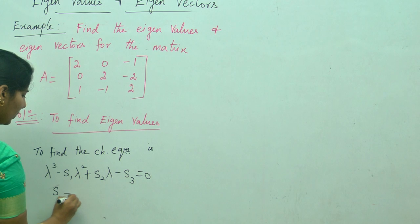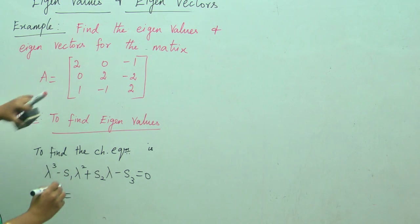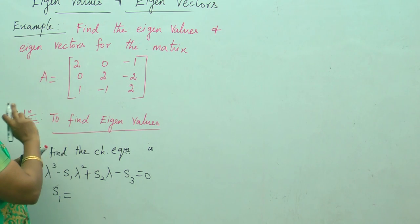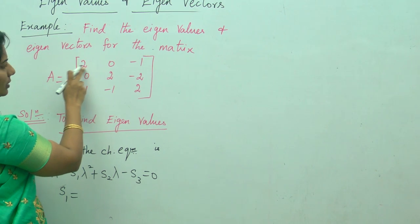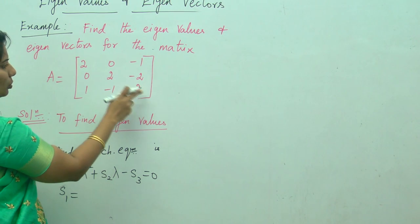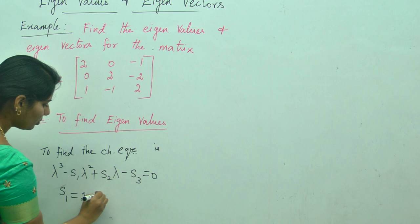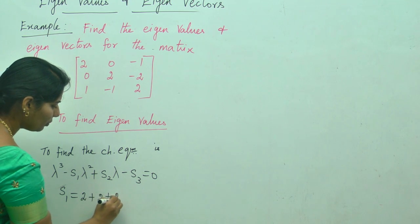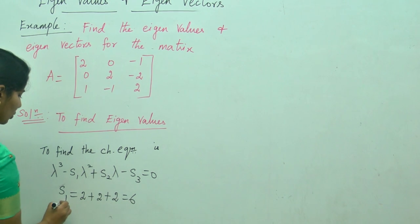As I explained before, what is S1? S1 is the sum of the diagonal elements of the given matrix. The diagonal elements are 2, 2, 2. So 2 plus 2 plus 2 gives you 6.